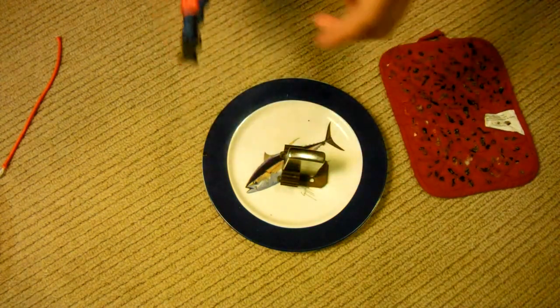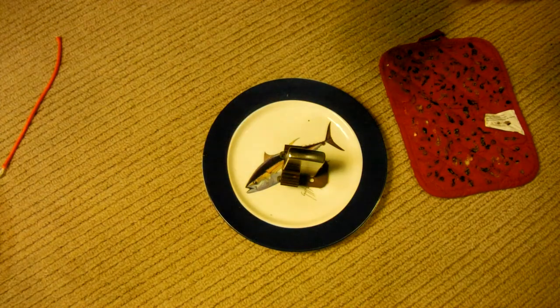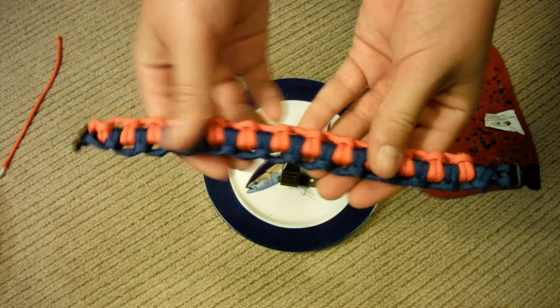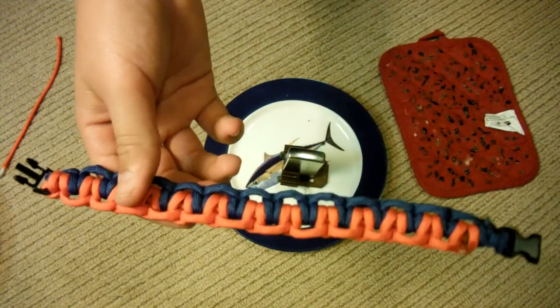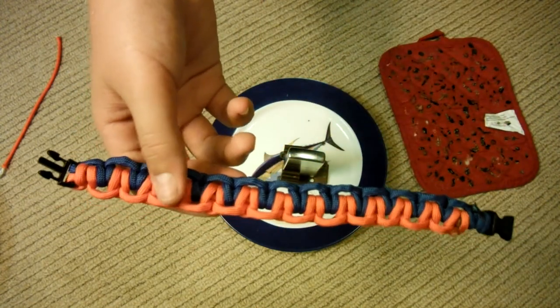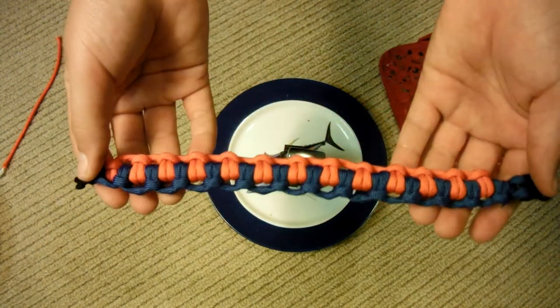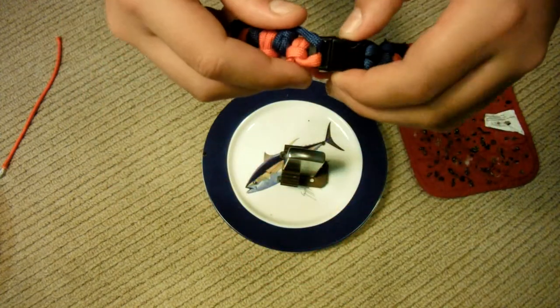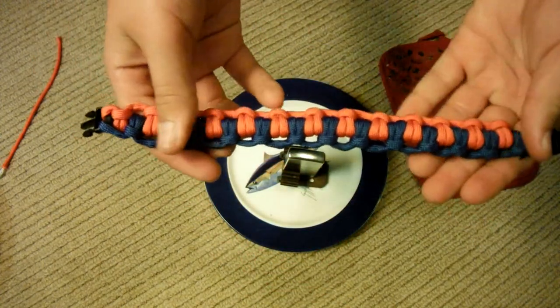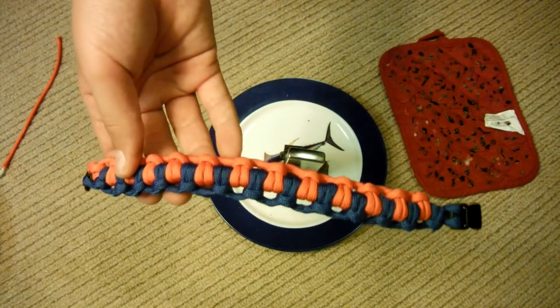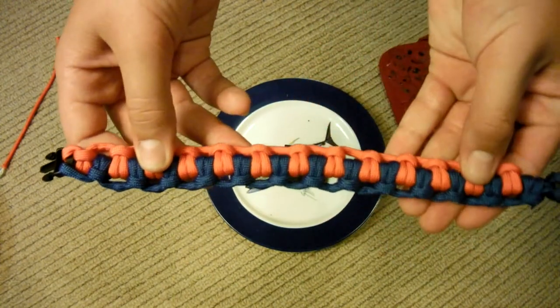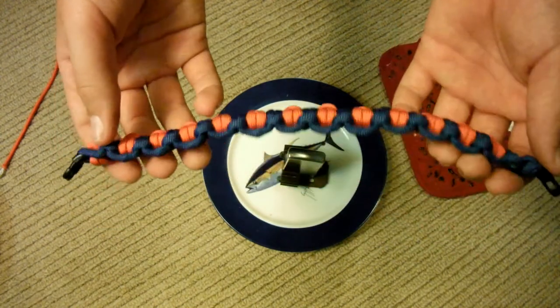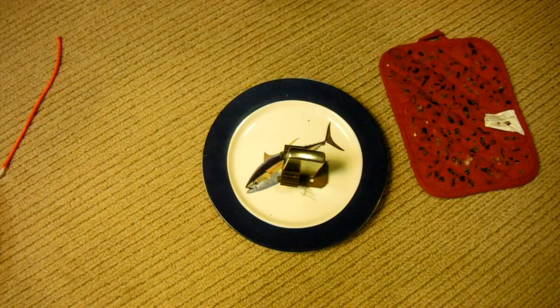Alright. And then, there you have it. A double-tatted knot paracord bracelet with a buckle. Now, the bottom side looks a little messy, but that's alright. As long as the top side looks good. So, there's your double-tatted knot paracord bracelet. Check out my channel. And then I'll put that link where I found how to. Well, I just, I found the picture of this and then I just figured out how to make it. But check out my channel. I've got a bunch of cool stuff on there. And thank you for watching.